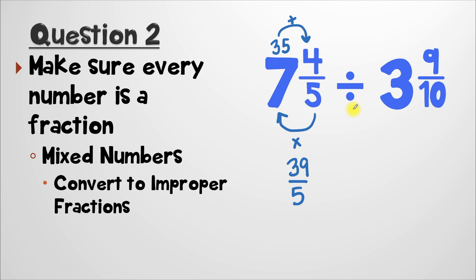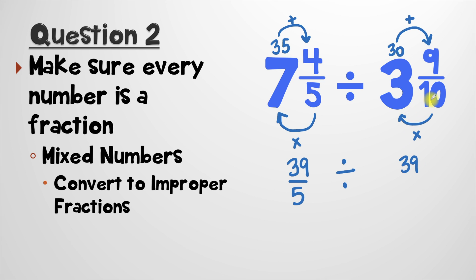Don't forget to bring down your division symbol. And finally, we have to do the same exact thing to three and nine-tenths. First, we'll take our denominator and multiply it by our whole number — that's ten times three, which gives us thirty. Next, we're going to take thirty and add it to our numerator, so that's thirty plus nine, which gives us thirty-nine. Then, finally, we're going to keep our denominator, ten, exactly the same. So our new problem is thirty-nine over five divided by thirty-nine over ten.